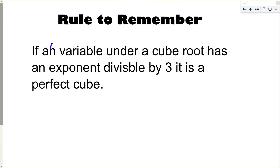So it's a really straightforward rule to remember. If a variable under a cube root has an exponent divisible by 3, it is a perfect cube. That's the rule. So now the other thing we're going to do is: what happens if the exponent is not divisible by 3?